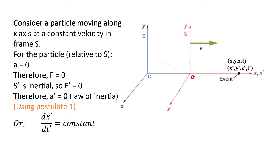Consider a particle moving along the X axis at a constant velocity in frame S. The acceleration of the particle in frame S is zero, so the net force on the particle in frame S is zero. Since net force does not change from one inertial frame to another, and both S and S prime are inertial frames, the net force on the particle in frame S prime is also zero, meaning its acceleration in frame S prime is also zero. We have used the first postulate here — no inertial frame is preferred and laws of physics are the same in all inertial frames.